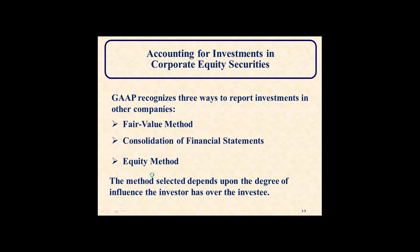Accounting for investments in corporate equity securities: GAAP recognizes three ways to report the investment of other companies. The first way is the fair value method, the second way is consolidation of financial statements, and the third way is the equity method. The method selected depends on the degree of influence the investor has over the investee.